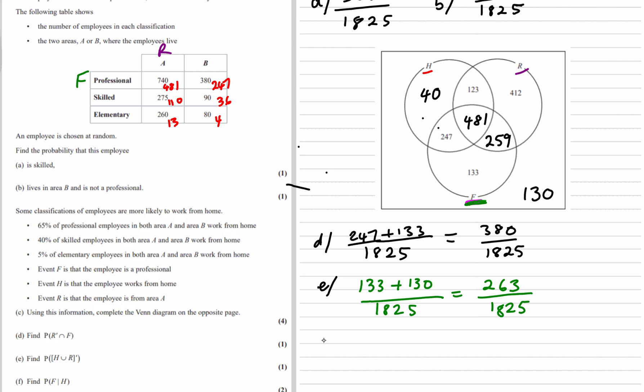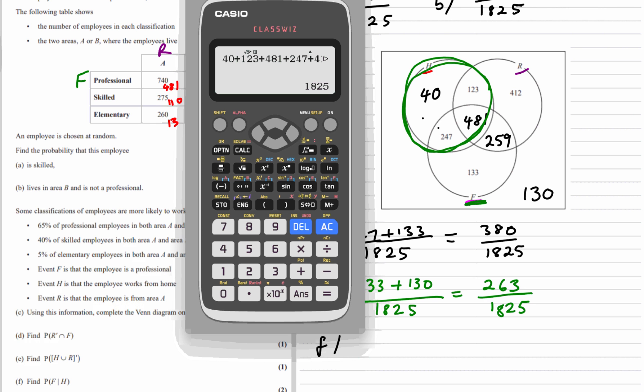And finally, the probability of F given H. So we're given H, so H is definitely happening. That's the denominator. So the denominator is 481, 247, and 40 added together.